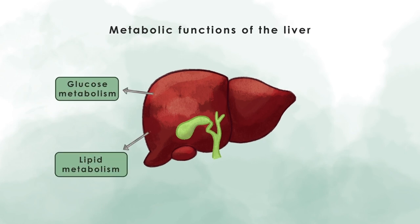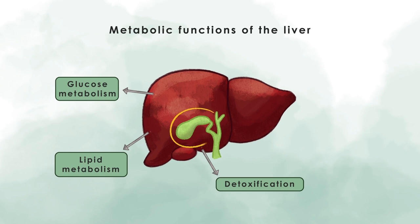On top of that, it is also the major organ for removing toxins from our blood. A structure that is closely attached to the liver is the gallbladder, which produces bile, and this is extremely important for fat digestion.